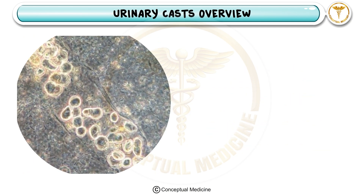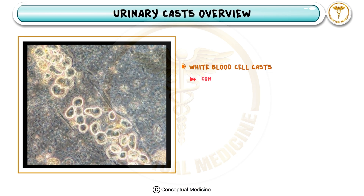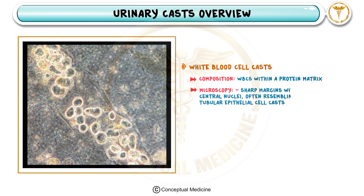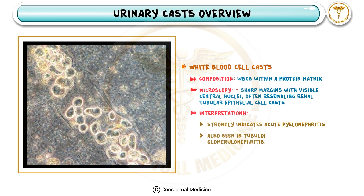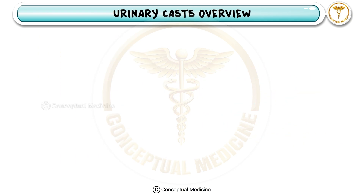White blood cell casts form when WBCs get trapped in the protein matrix. They have sharp margins with visible nuclei under the microscope, making them easier to identify. Their presence strongly suggests acute pyelonephritis, an infection of the kidney. However, they may also appear in tubulointerstitial nephritis, glomerulonephritis, and even transplant rejection.